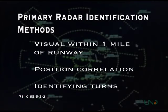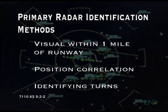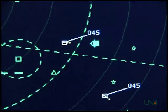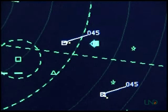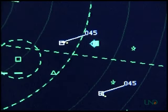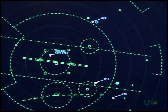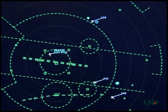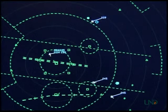Any of these three methods can be used to radar identify a target. However, if at any time you are uncertain of a target's identity, you must use more than one of these methods. For example, if you receive a position report but several aircraft are in the vicinity of the fix or reporting point, you can issue an identifying turn — or more than one identifying turn — to ensure that you are identifying the correct target. When in doubt, always err on the side of caution.